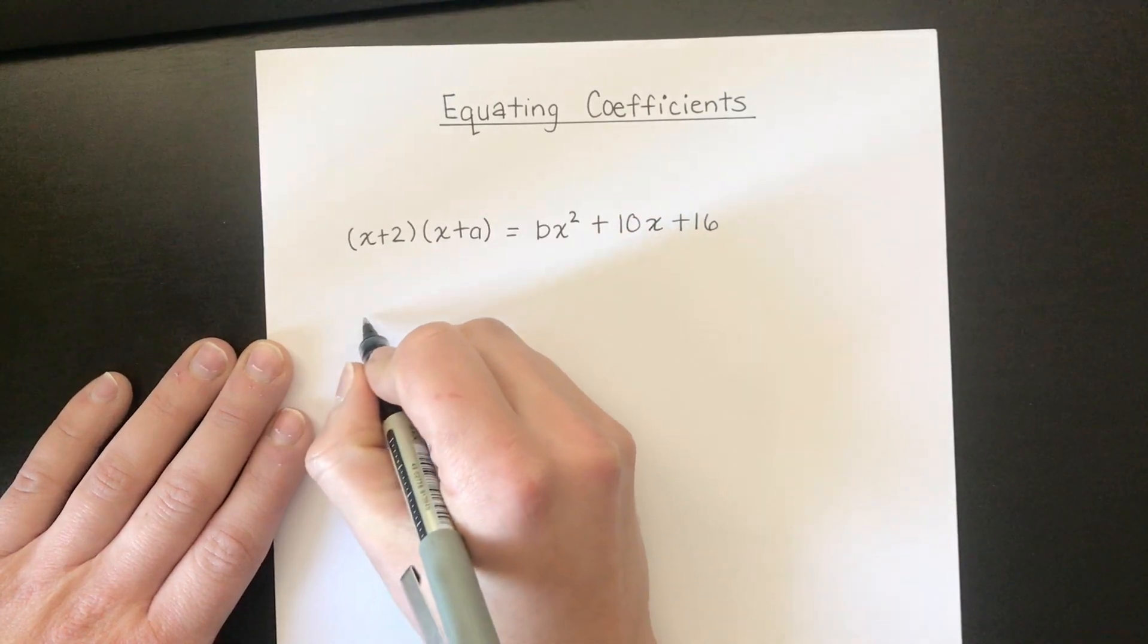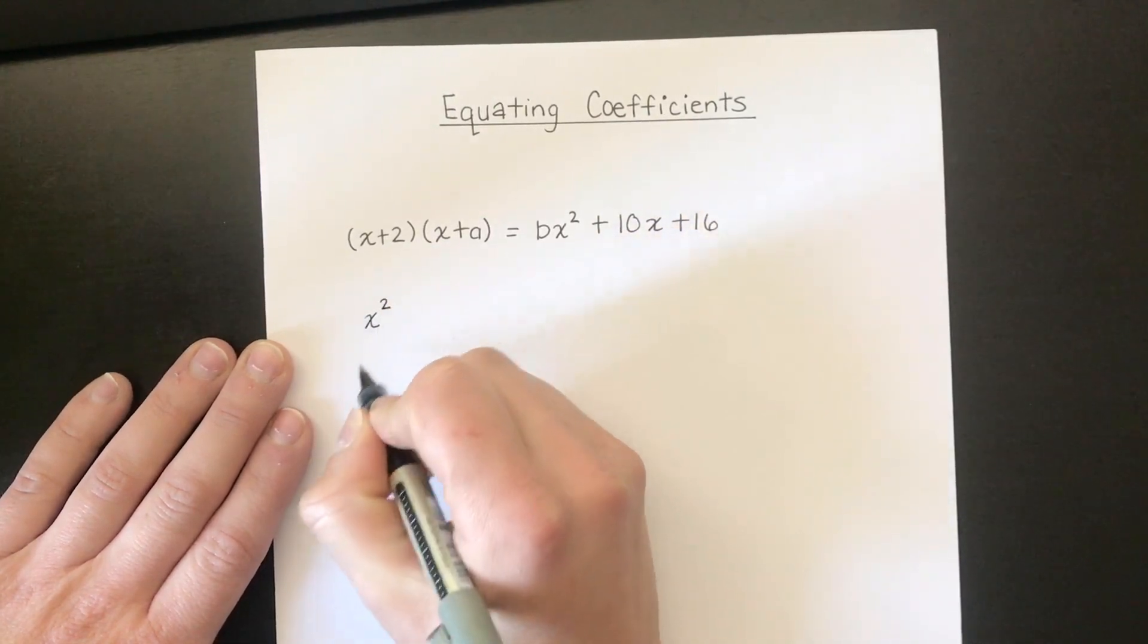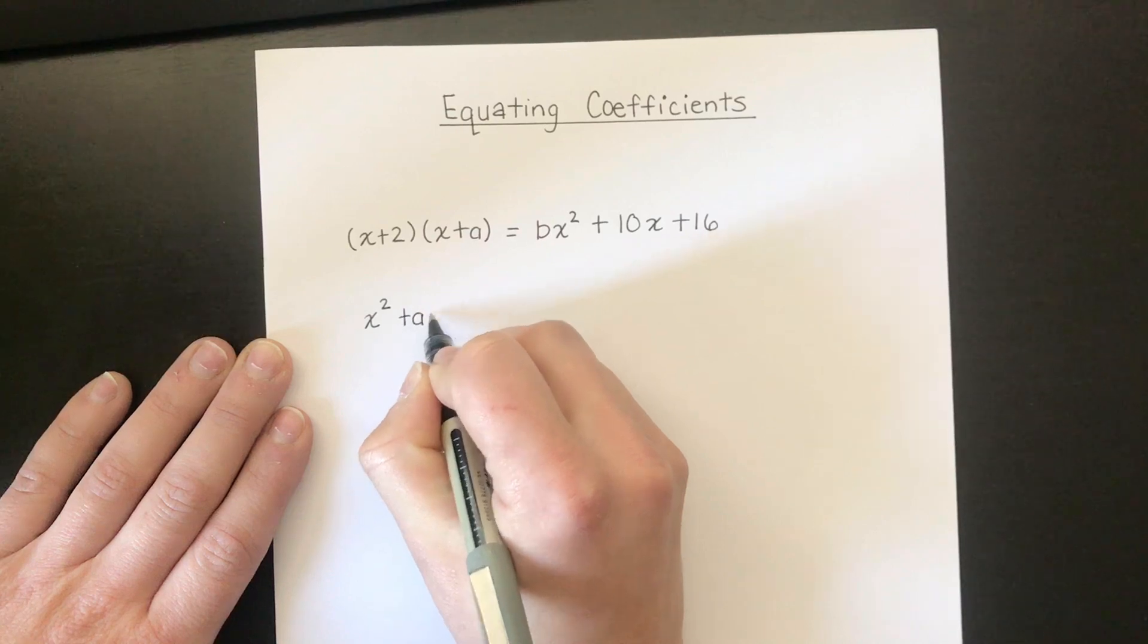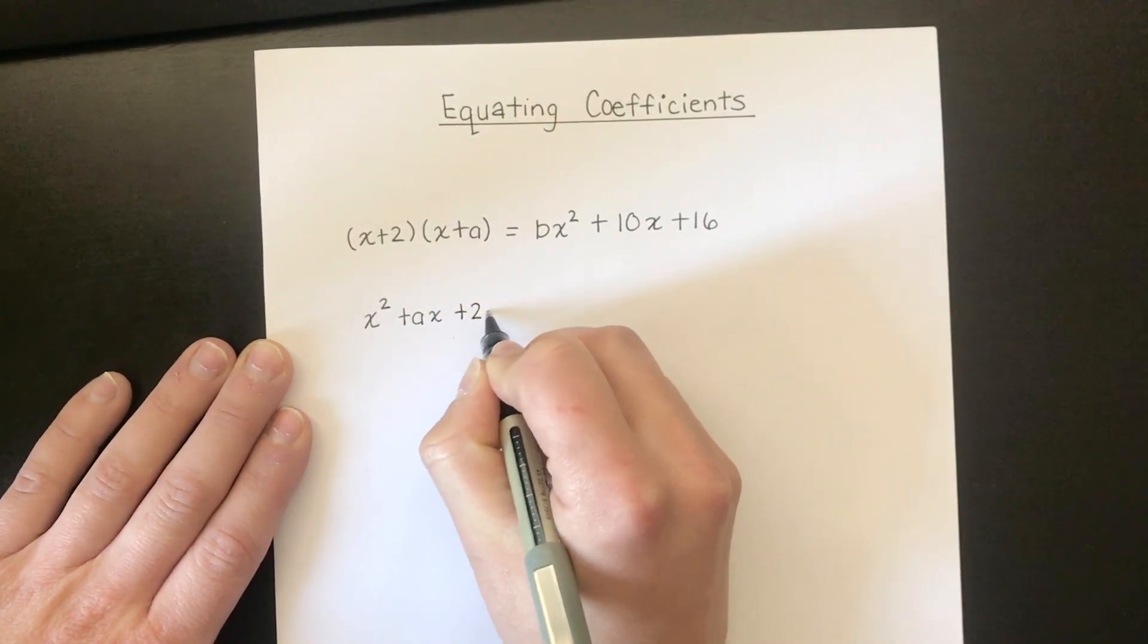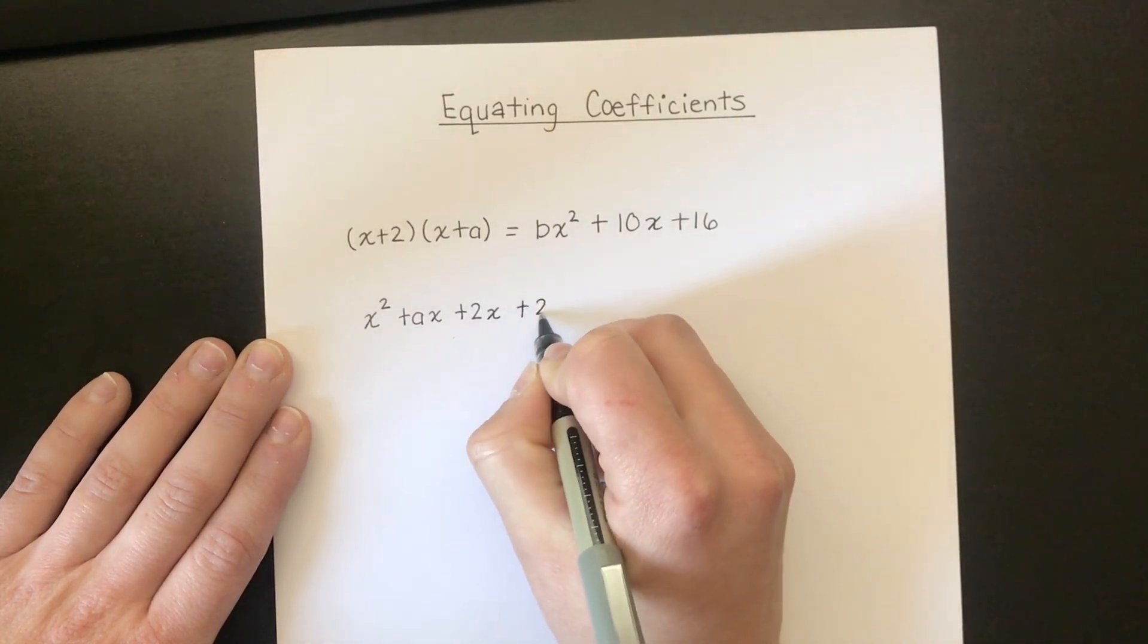So x times x is going to give us x², x times by a is going to give us ax, x times by 2 is going to give us 2x, and 2 times by a is going to give us 2a.